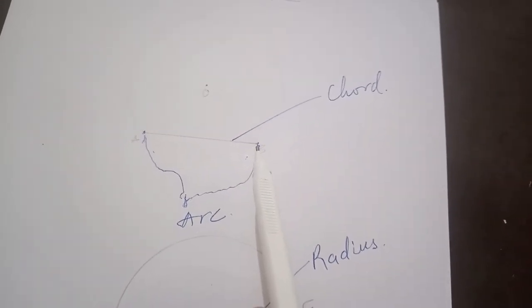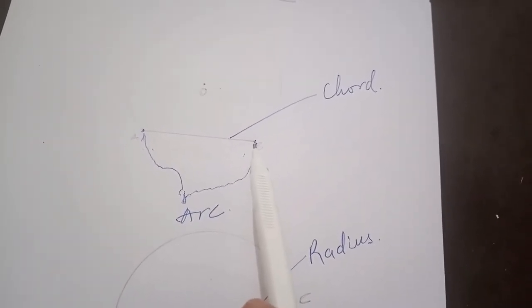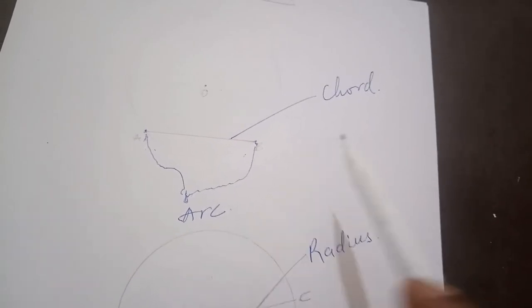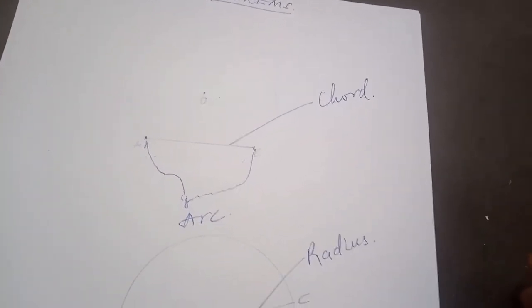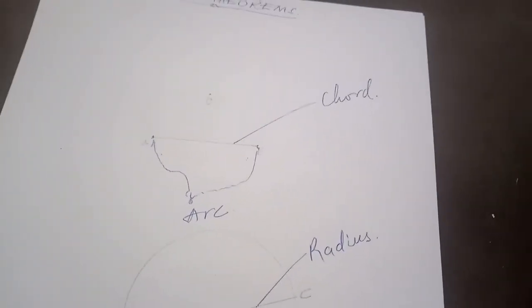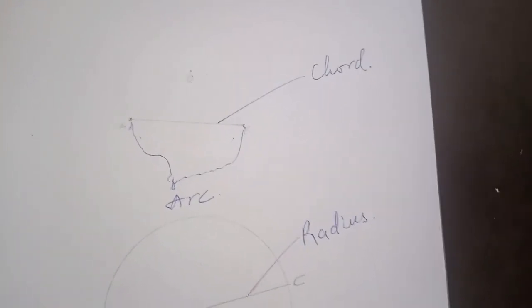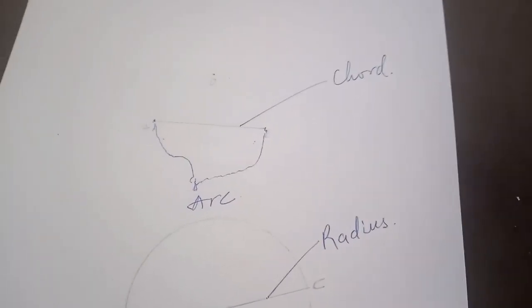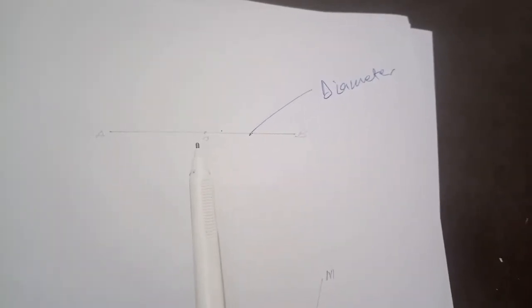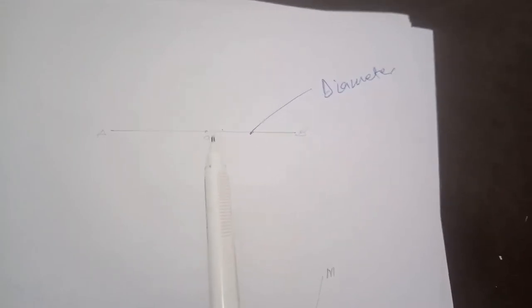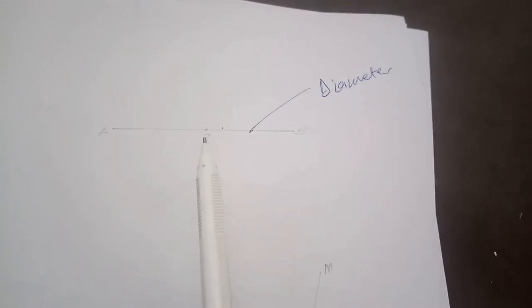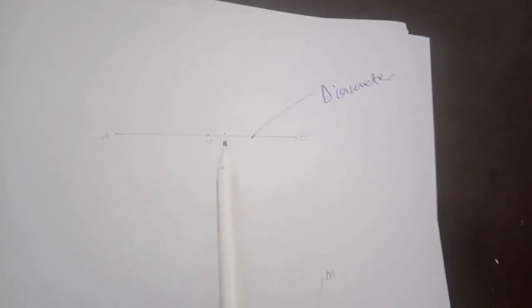We also have the diameter of a circle. The diameter of a circle is also a chord, but it is a special chord that passes through the center of a circle. So a chord is any straight line that touches two points on the circumference of a circle. When a chord passes through the center of a circle, that chord qualifies to be called the diameter of the circle.